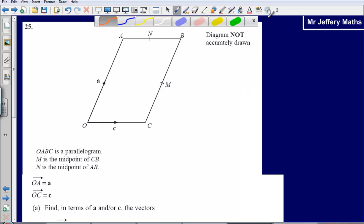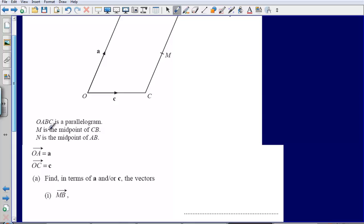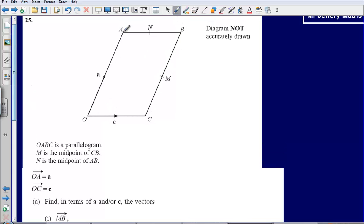This is question 25 from the 2008 non-calculator paper. Here we are given a diagram and we are given some information about this diagram. Our key information really is that it is a parallelogram so what we can say is that these lines here, O to A and C to B are parallel, and O to C and A to B are also parallel.